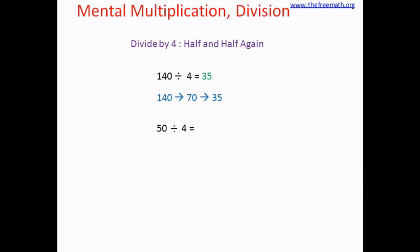Let's take more examples. Divide 50 by 4: half it to get 25, then half again — 25 halved is 12.5. The answer is a decimal, which is fine. So 50 divided by 4 is 12.5. Divide 30 by 4: half 30 to get 15, then half again to get 7.5. So 30 divided by 4 is 7.5.